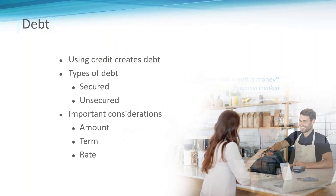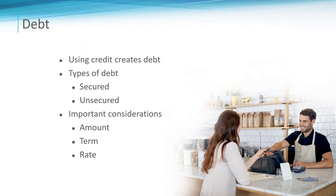Debt may be divided into two basic types: secured and unsecured. Secured debt is backed by a lien on collateral — examples include a home equity loan or car loan. Unsecured debt has no lien on real or personal property — think personal installment loans, student loans, and most credit card accounts. When taking on debt, there are three important considerations: the amount, which impacts payment size; the term, since larger loans like a 30-year mortgage or 84-month auto loan have longer terms; and the interest rate, which affects total cost.